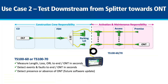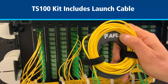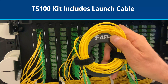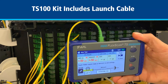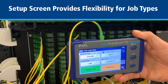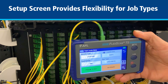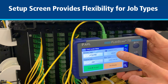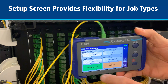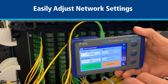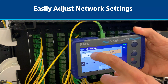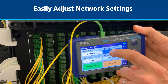The TS100 can also be used to test distribution and drop cables in the downstream direction from the splitter at the PFP toward the ONT. In this case, the test connection from the TS100 to the patch panel must be completed using the launch cable included in the TS100 kit. After cleaning and connecting the launch cable to the TS100 and the patch panel, touch the TS100 tool icon to view the Fault Locate Setup screen. Since the distribution and drop network is point-to-point from the PFP patch panel to the splitter, set network type to point-to-point. Then touch Launch Cable and enter the length of the connected launch cable.